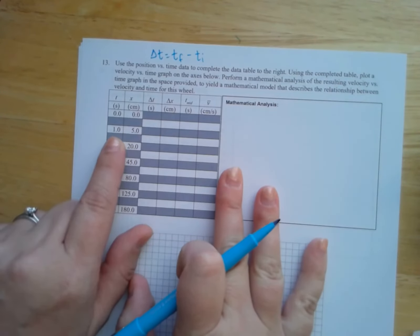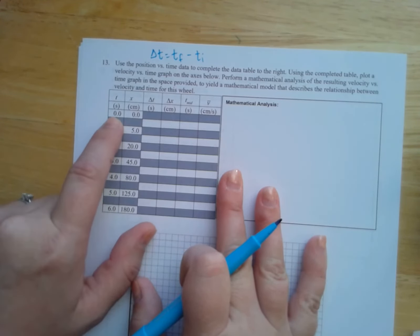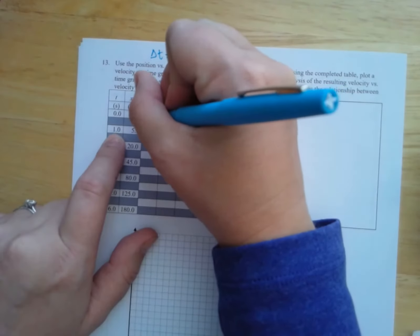So what you're going to do for that delta T is look at the difference in time between the two adjacent blocks. So here my final time is one, my initial time is zero. So I'm going to write one second in there.